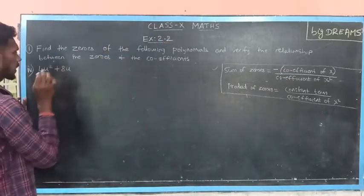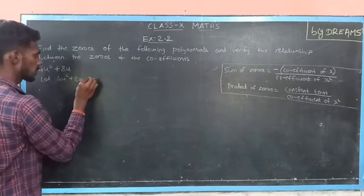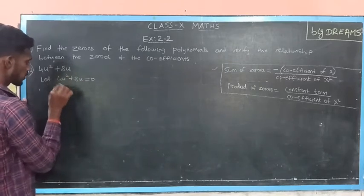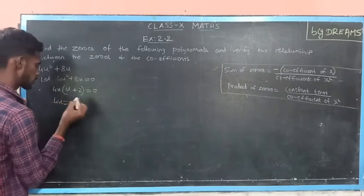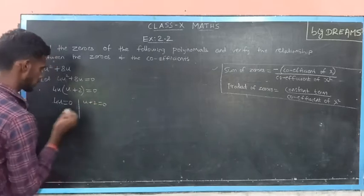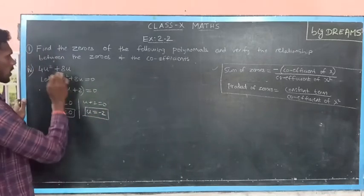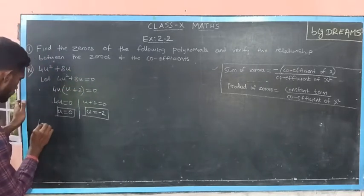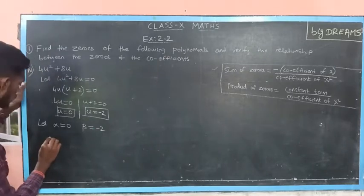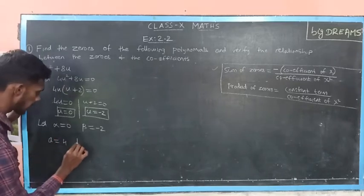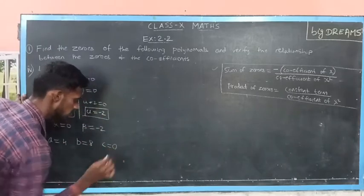Then the fourth subdivision: 4u squared plus 8u. Let us substitute the value of the polynomial to be 0 for finding the zeros of the polynomial. Taking 4u as common, I will get 4u into u plus 2 is equal to 0. Separately equating to 0, I will get 4u is equal to 0 and u plus 2 is equal to 0. Here u is equal to 0 and u is equal to minus 2. These are the zeros of the polynomial 4u squared plus 8u. Let us substitute alpha is equal to 0 and beta is equal to minus 2. Then comparing the polynomial to standard form: a, the x squared coefficient, is 4; b, the x coefficient, is 8; and c, the constant term, is 0 since there is no constant term.